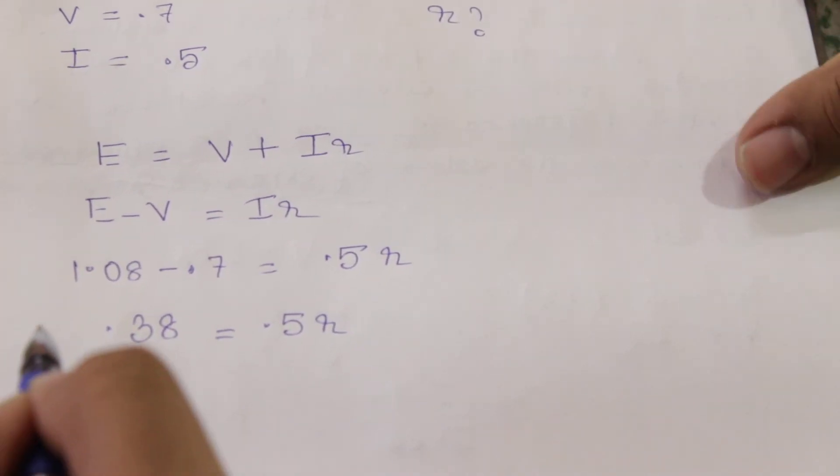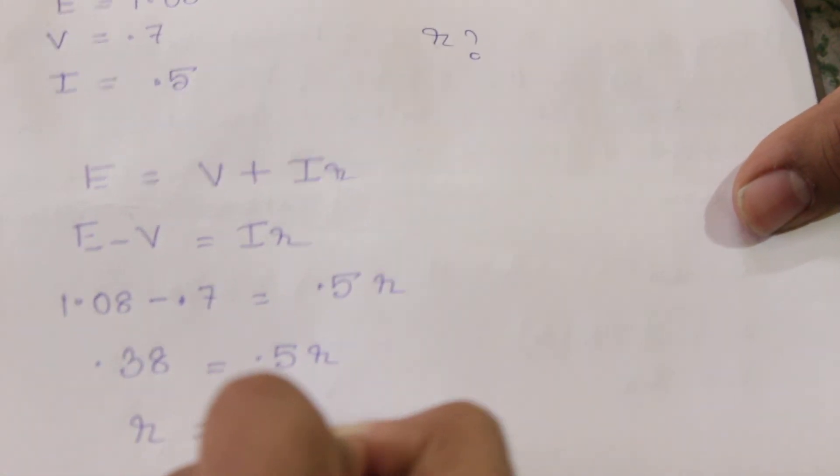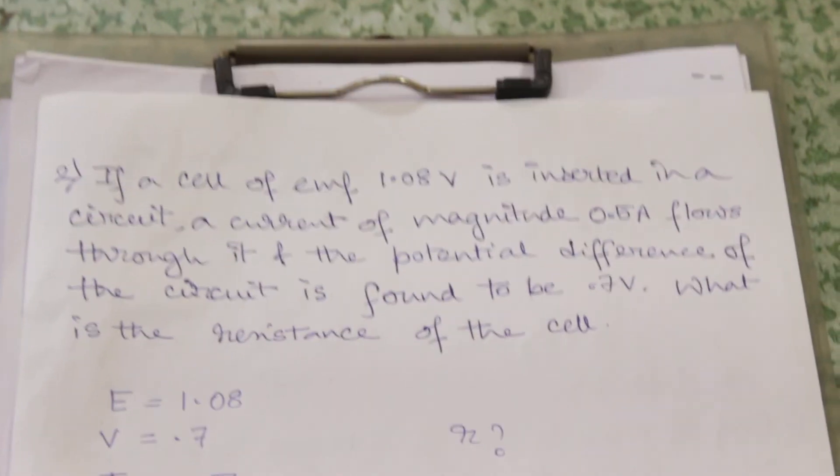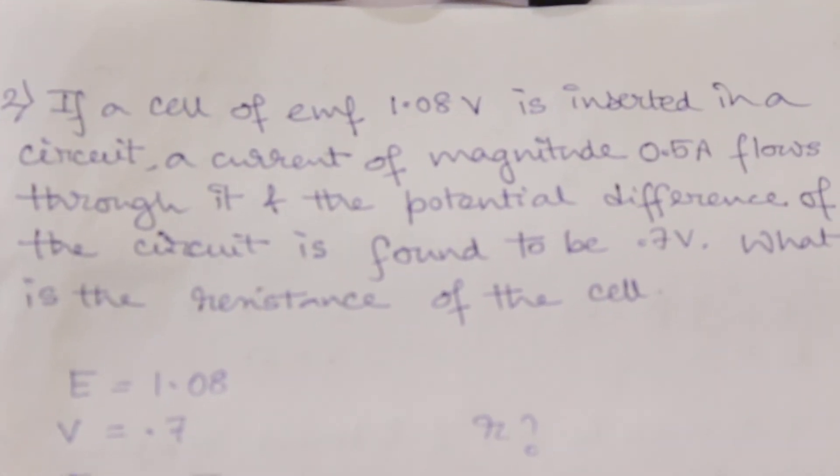So r will be equal to 0.76 ohms. So this is the internal resistance. Okay, understood?